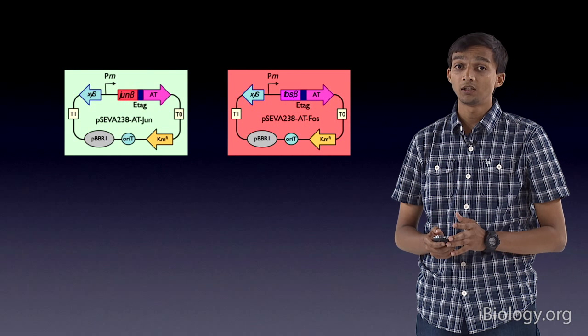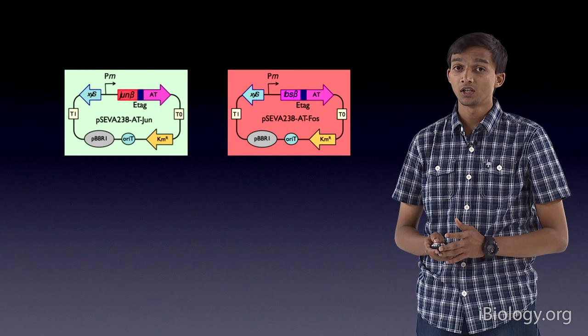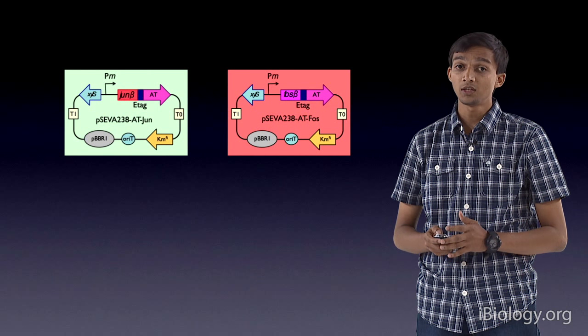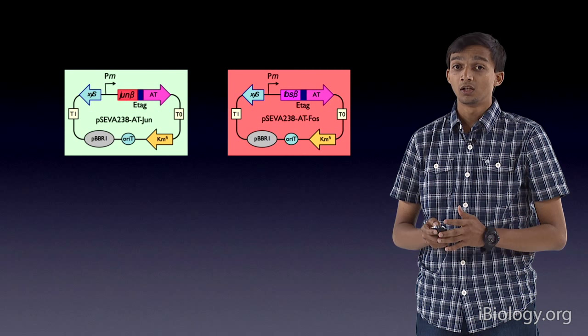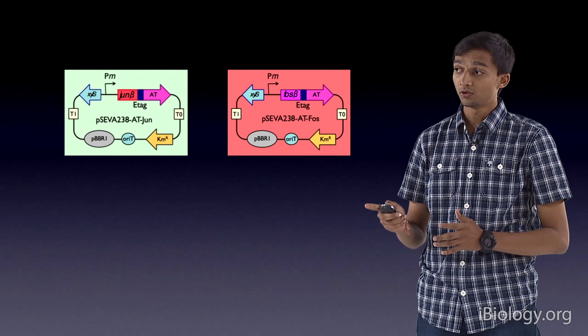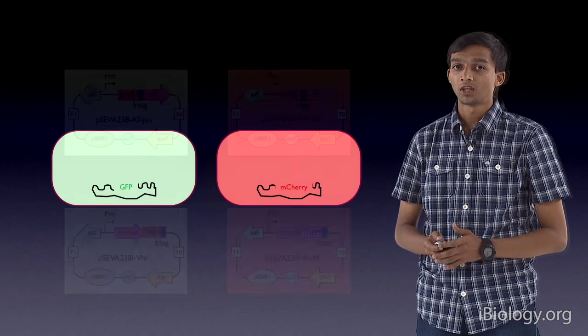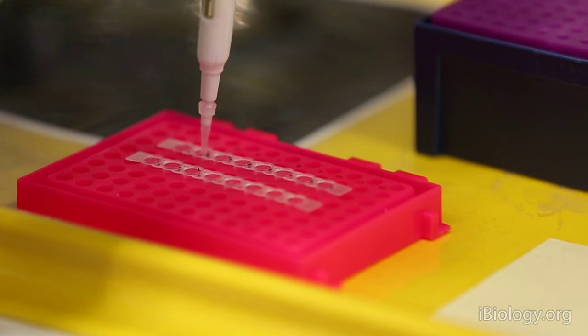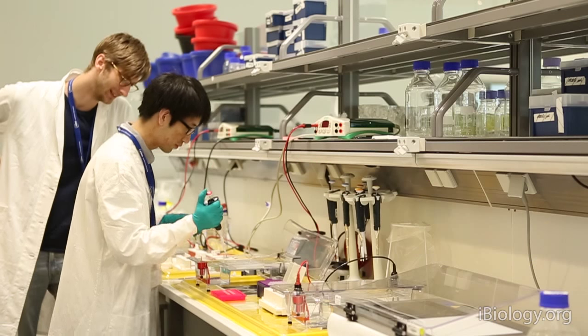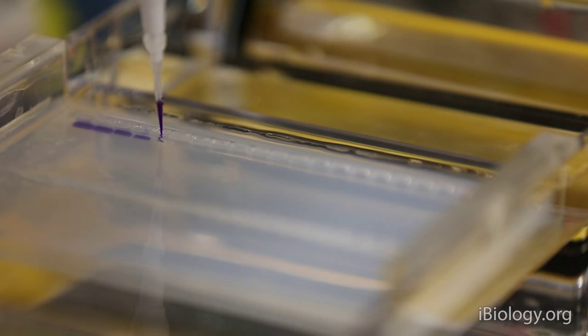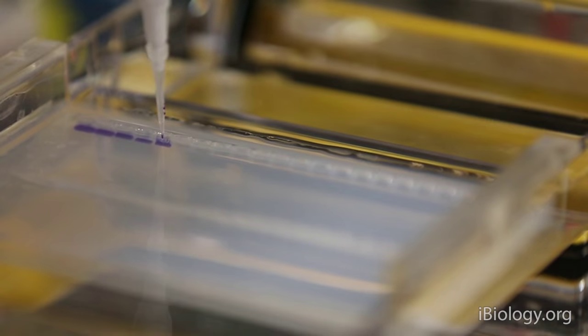These are the plasmids containing our different adhesins. We are testing two different types of anchor systems. These are the autotransporters and these are the intimins. We introduce this into our bacteria by electroporation. We then check that the electroporation was successful by plasmid extraction or PCR.